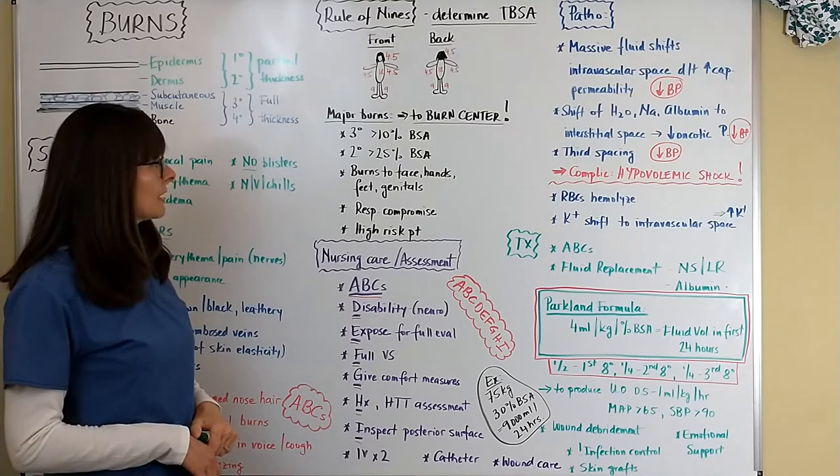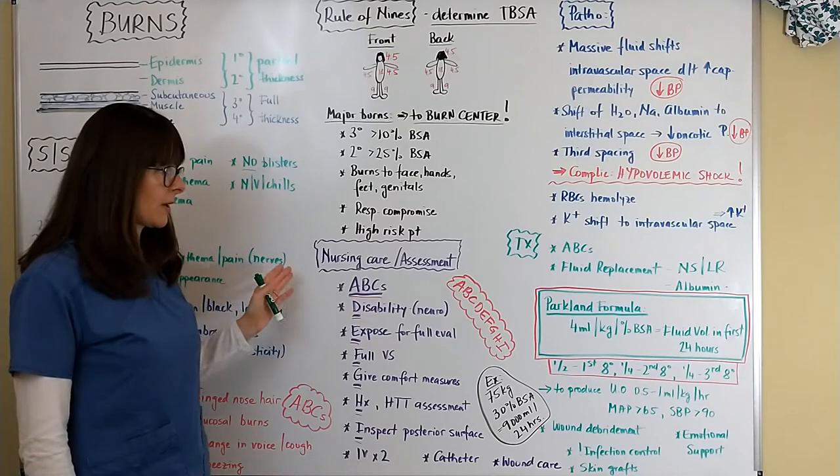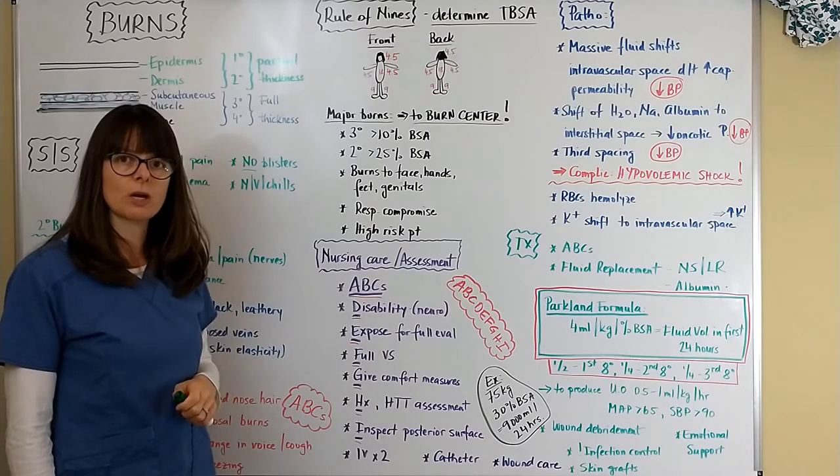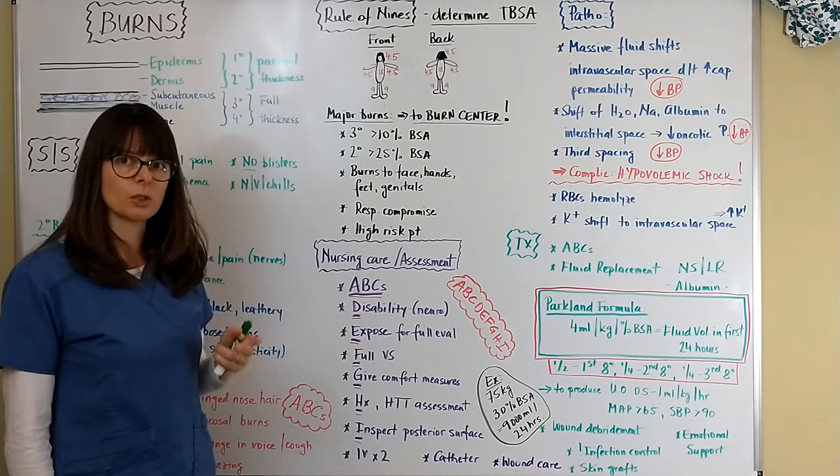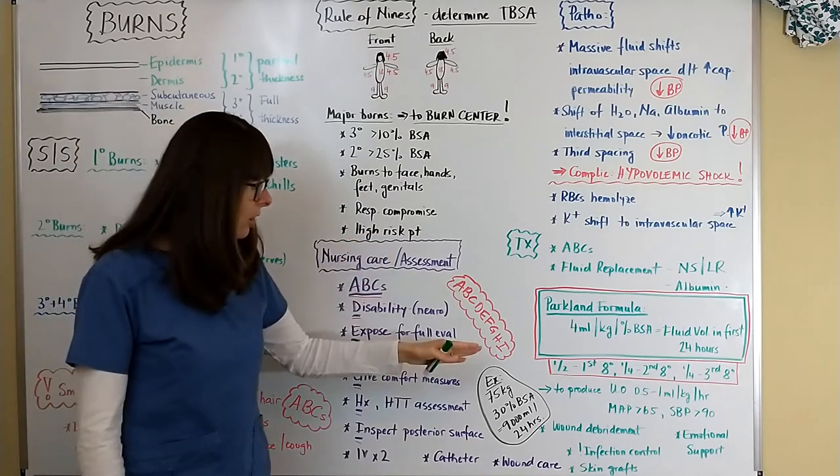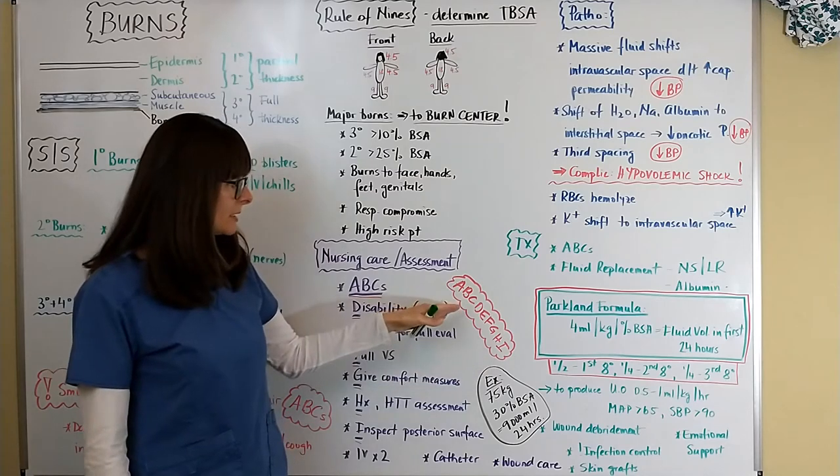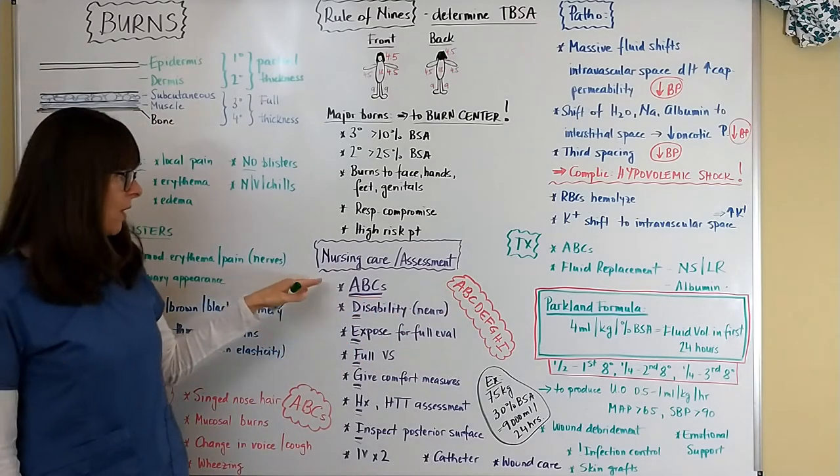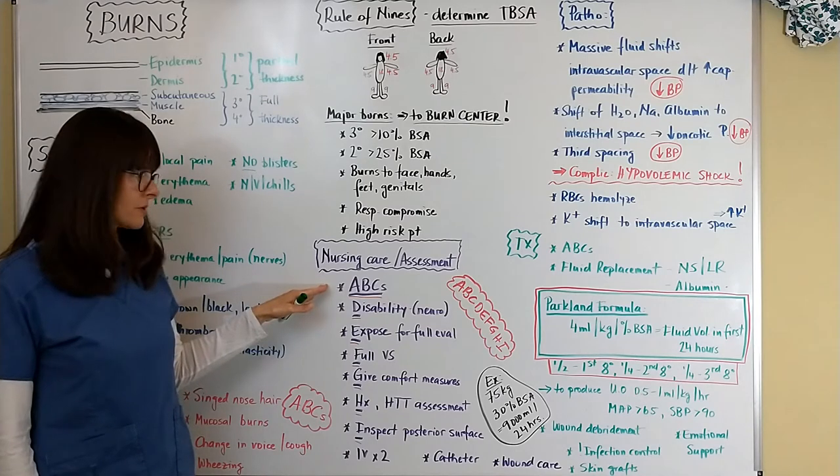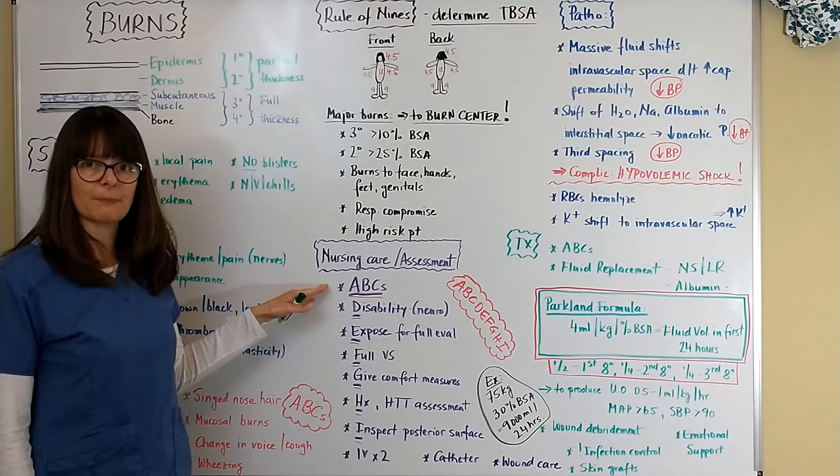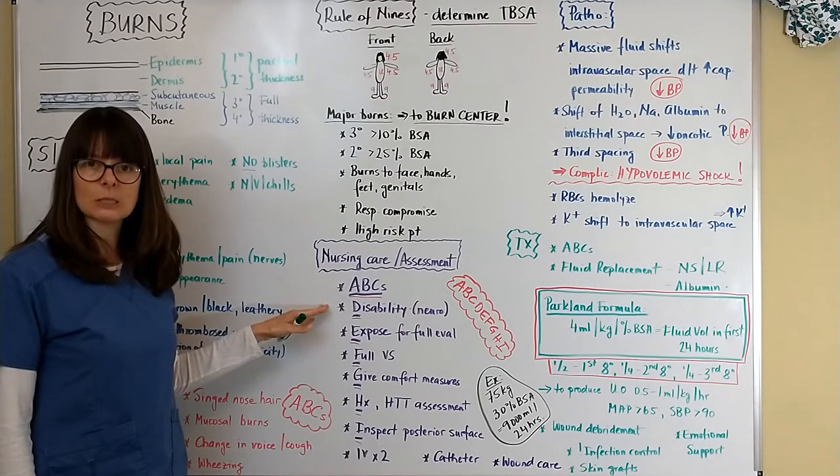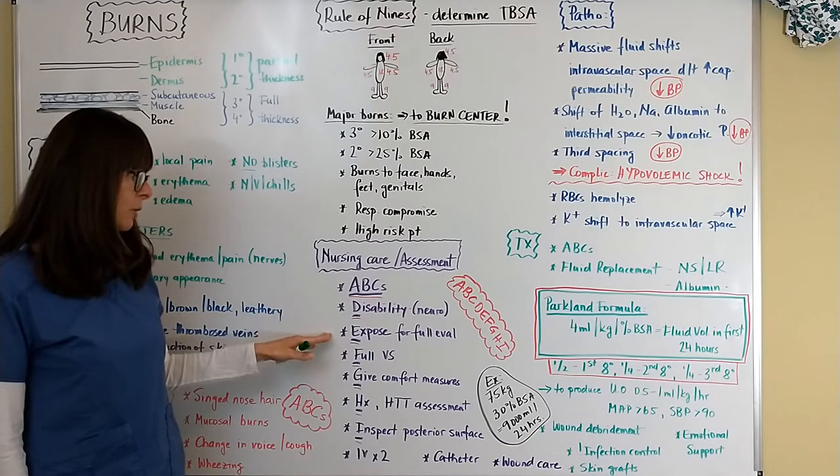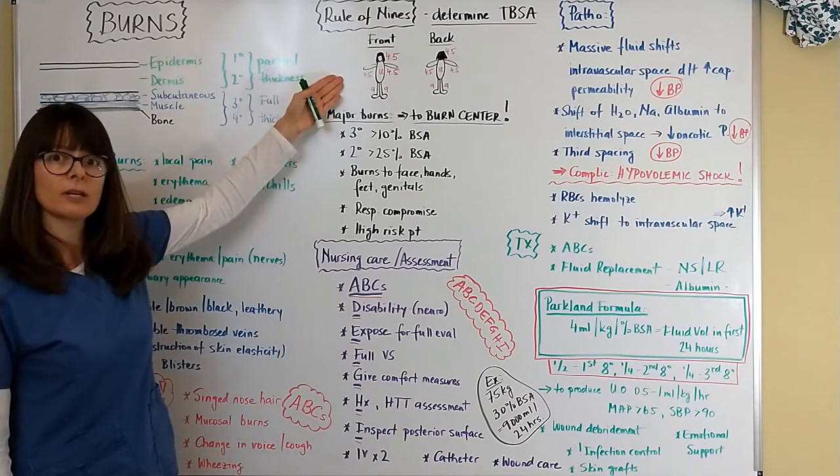Nursing assessment: we always want to focus on our ABCs and a burn patient you can almost consider as a trauma patient. Whenever we're talking about emergency assessment of a patient we go way beyond the ABCs, we go in the alphabet all the way down to I: A B C D E F G H I. We know our airway, breathing and circulation are always first and we need to intervene at any level when we find something abnormal. D is for disability, assessment of the neurologic status, level of consciousness, how are they doing neurologically. E is for exposure because we need to assess the patient's full extent of the burns, completely expose them and assess their skin from head to toe to determine total body surface area burned.